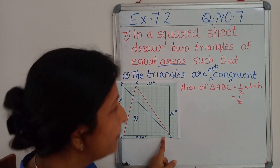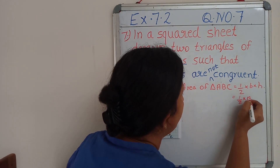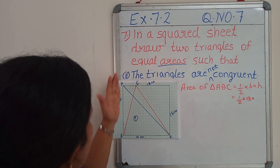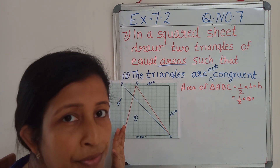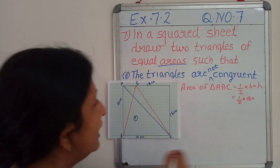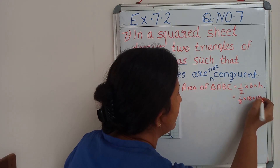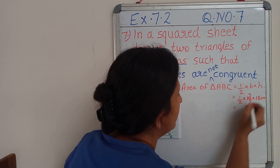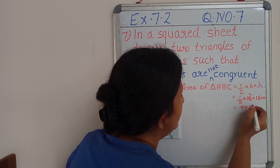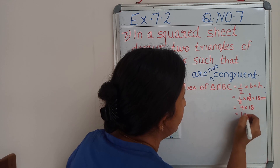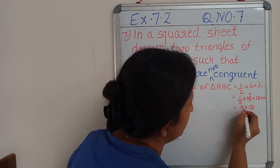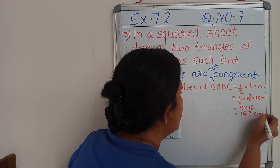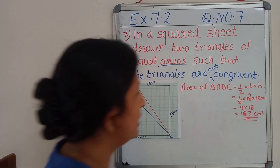What is the height of this triangle? AB is the height of this triangle and it is 18 cm. So 9 into 18 equals 162 cm square.